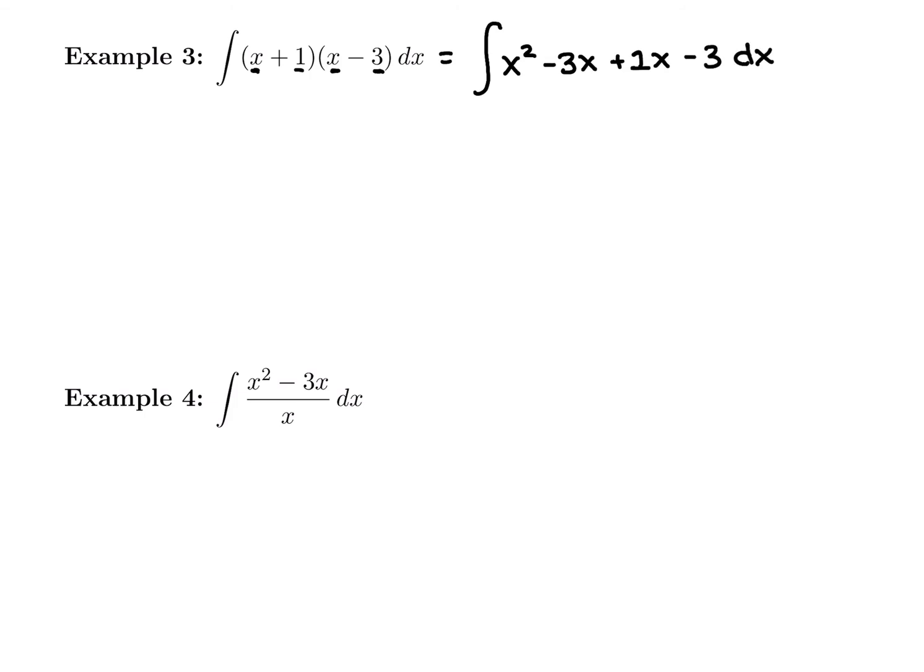So all we did was distribute. We keep our take the integral symbol because we didn't take the antiderivative yet. And I'm still not ready to take the antiderivative because I can combine some like terms. Since I have x squared, that's my first term. But my second term, I have a negative 3x plus 1x, which is going to give me a negative 2x minus 3. Combining some like terms.